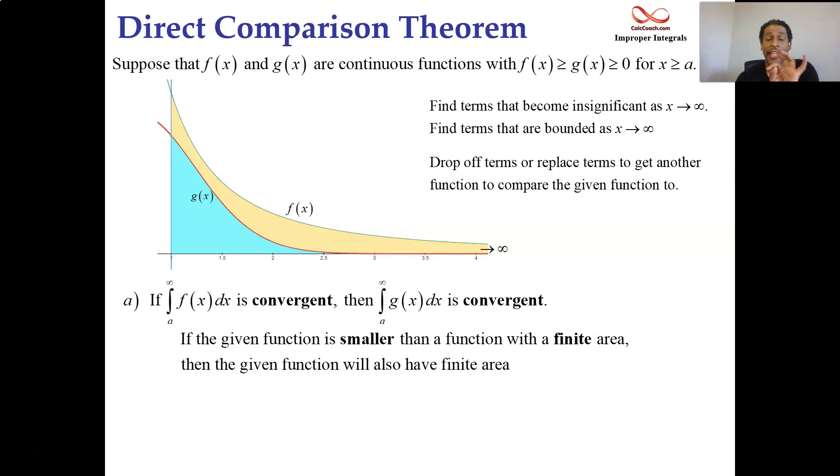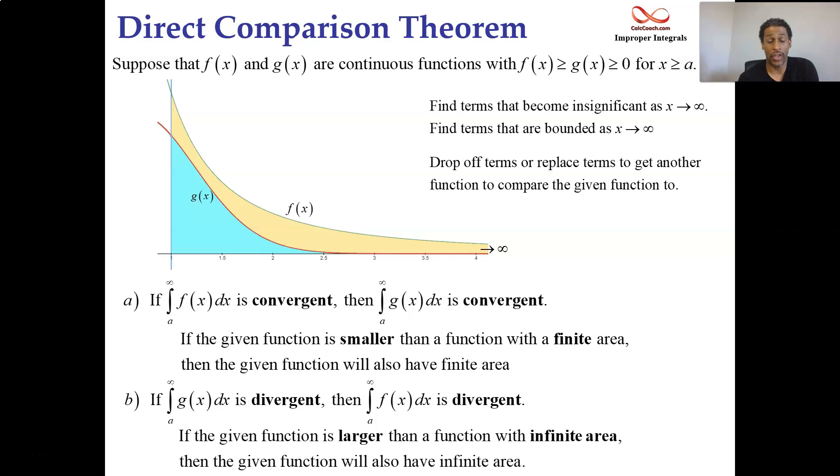Now let's flip it. Let's say that through that process, you went out and got a function that's smaller and you're able to integrate that function. You know exactly what that function does. And let's say that function diverges. The area is infinite. If you have an integral that you went out and got through that process that is divergent, then the one that was given is the bigger one. And then that one has no choice but to also be divergent. And so what we're saying is that if the given function is larger than a function that has infinite area, then the given function will also have infinite area. And that's the direct comparison theorem.